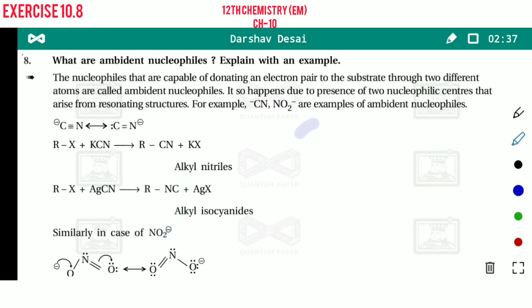Cyanide, N-C means isocyanide. If carbon acts as a nucleophile, then alkyl nitriles are formed. And if nitrogen acts as a nucleophile, then alkyl isocyanides are formed.